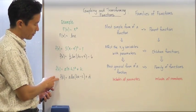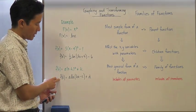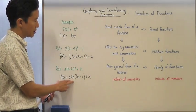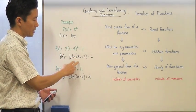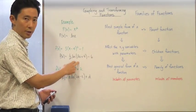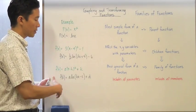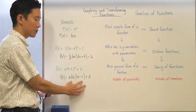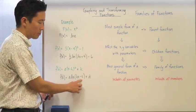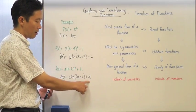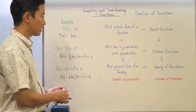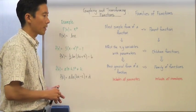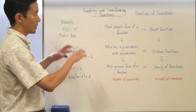For the logarithmic function, the parent is ln(x), and one example is a child function. Including all of them gives us the most general form, which represents all possible natural log functions.